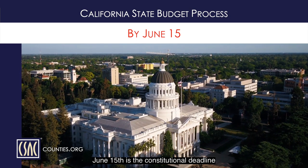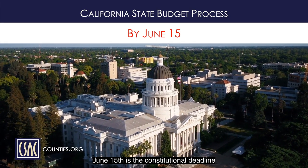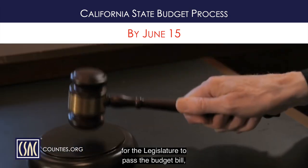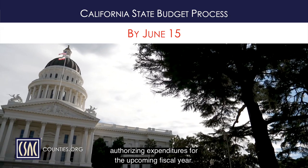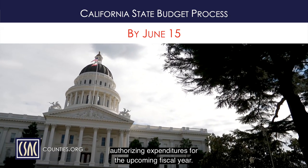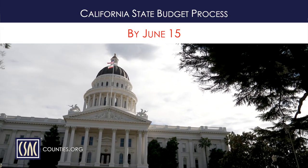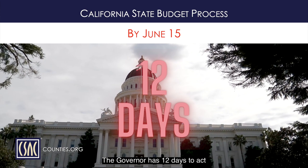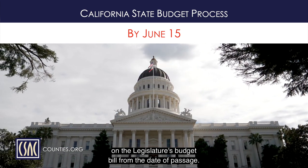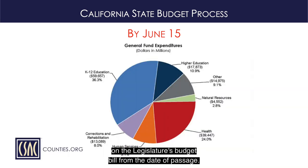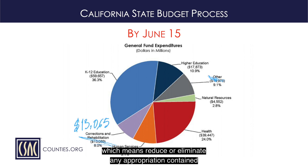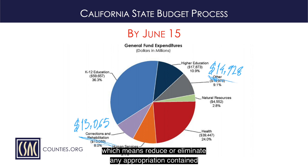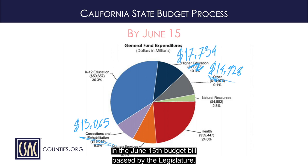June 15th is the constitutional deadline for the Legislature to pass the budget bill authorizing expenditures for the upcoming fiscal year. The Governor has 12 days to act on the Legislature's budget bill from the date of passage. Before signing, the Governor can blue pencil — which means reduce or eliminate — any appropriation contained in the June 15th budget bill passed by the Legislature.